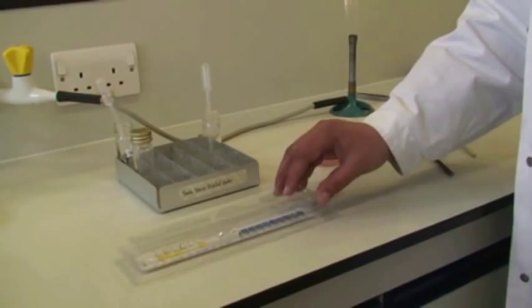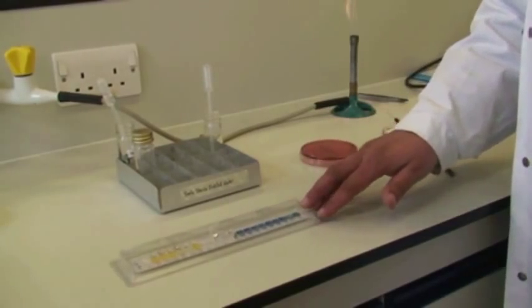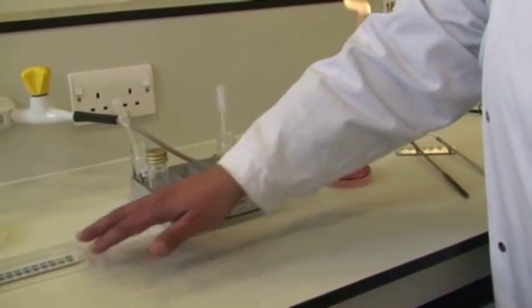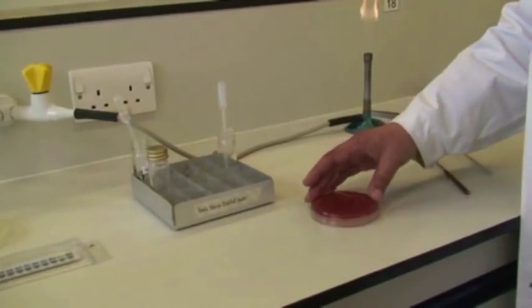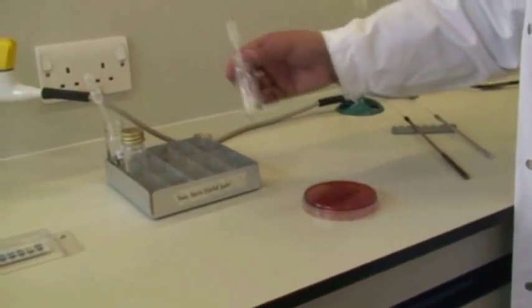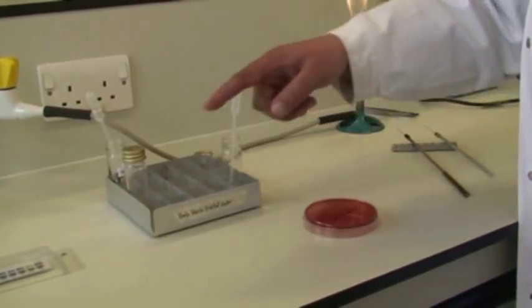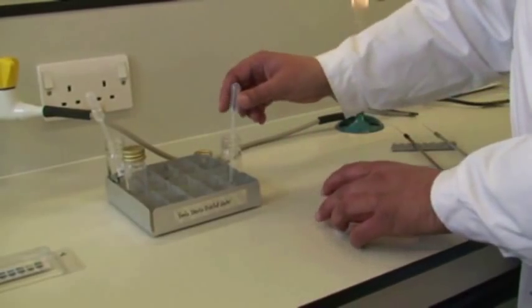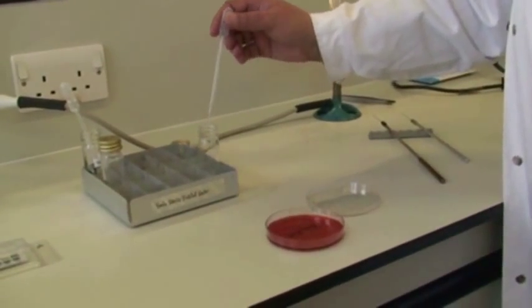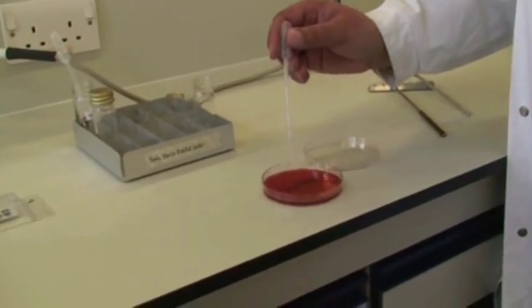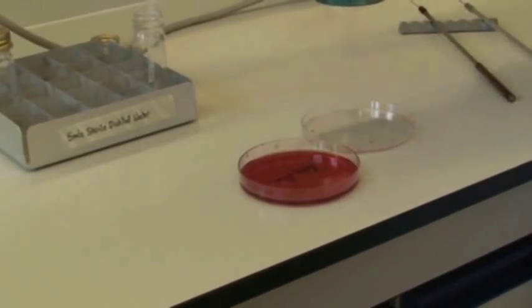Pop the lid back on so you don't contaminate with any bacteria that are available in the environment. Then we're going to do a purity plate with our bacterial suspension, just to make sure that what we've put in there is pure. We're just going to take one drop and drop it on there, and that will be sufficient.